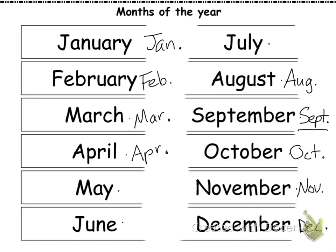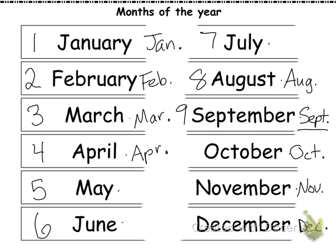We can also write the date without using any words at all — we call this writing the date using digits. We can use numbers from one to twelve to tell us what month of the year it is. So January is one, February is two, March is three, April is four, May is five, June is six, July is seven, August is eight, September is nine, October is ten, November is eleven, and December is twelve.